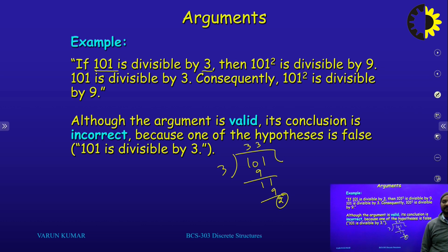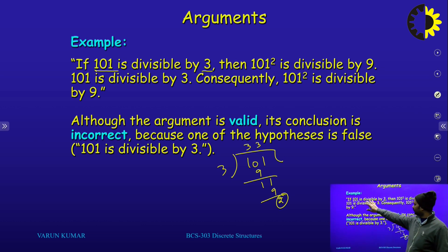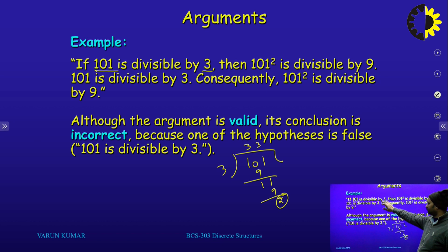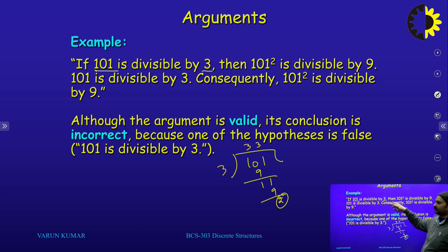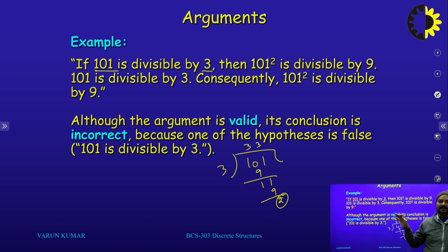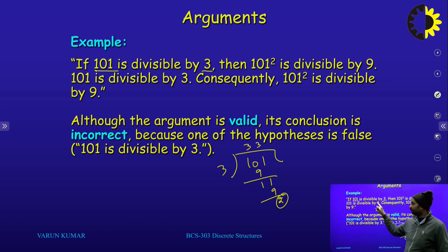Although the hypothesis says that if any number is divisible by 3, then the square of that number is also divisible by 9 — hypothetically it is correct — but our statement must be true.